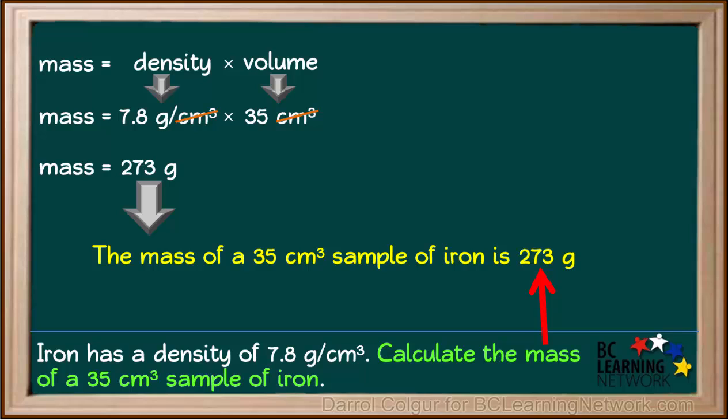So we can state that the final answer is: the mass of a 35 cubic centimeter sample of iron is 273 grams.